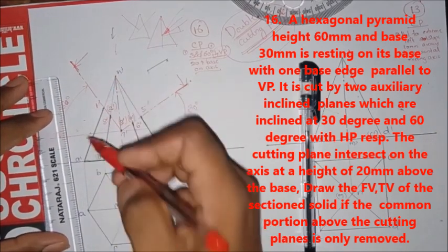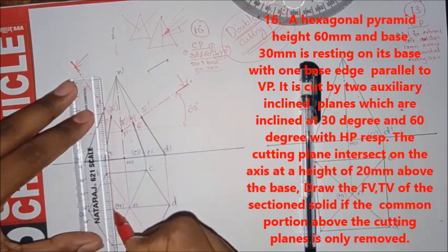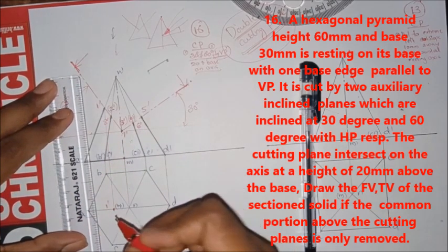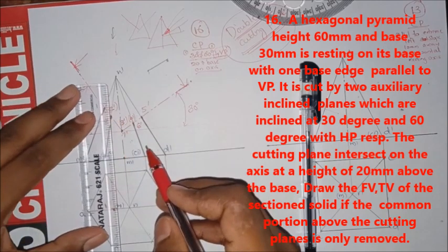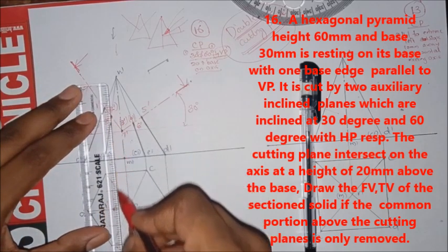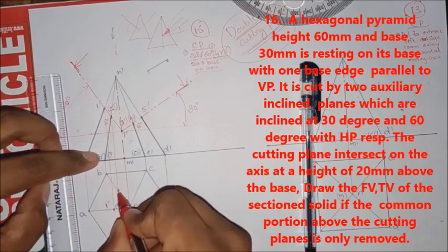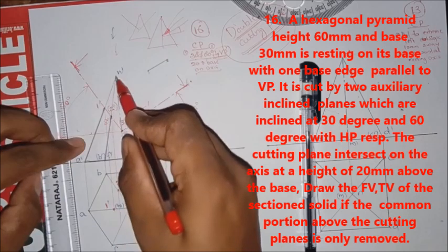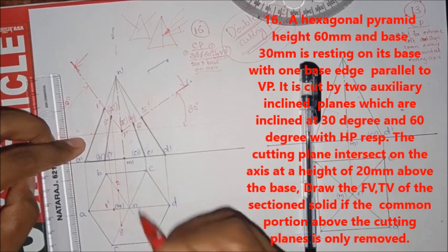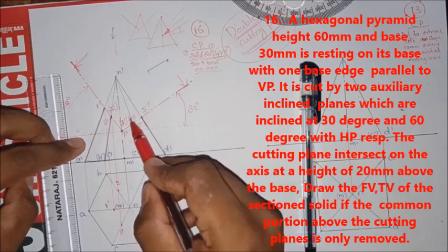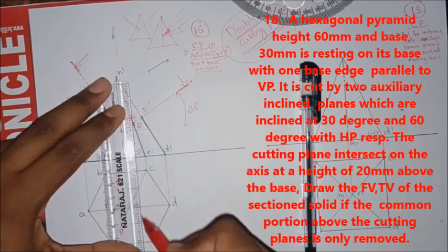I will project the first point — 1' is in between N and A. I will project the second point: 2'H. I will project the second point: 2'H. Then 3'H. Then 4'H.